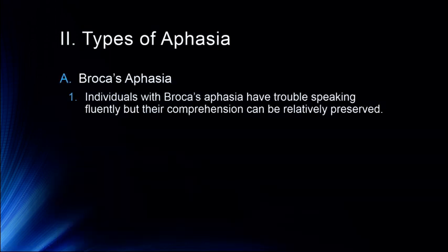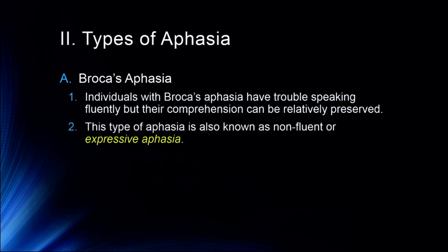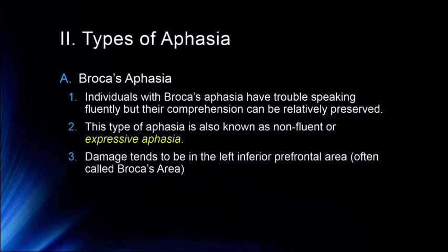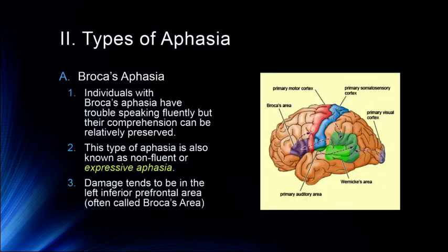Individuals with Broca's aphasia have trouble speaking fluently, but their comprehension can be relatively preserved. They have difficulty in language production, so this is usually called non-fluent or expressive aphasia — an inability to fluently express themselves. Damage tends to be in the left inferior prefrontal area, often called Broca's area. It's not a precise area in every brain, but generally in that left inferior prefrontal region, as you can see here — a fairly large area that can contain Broca's area.